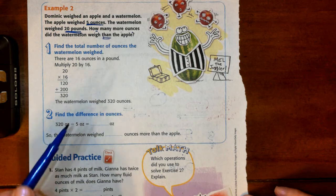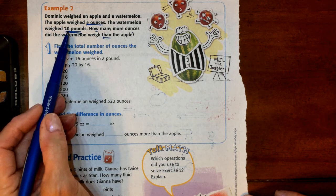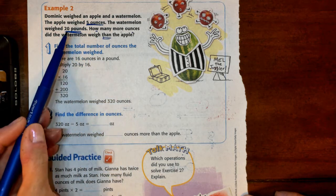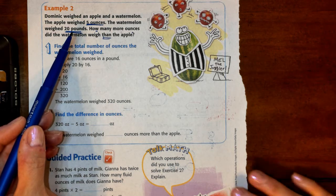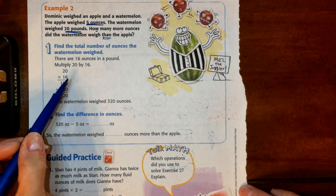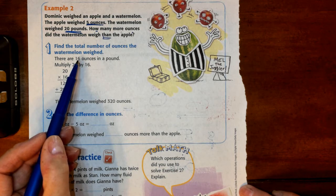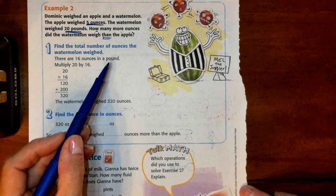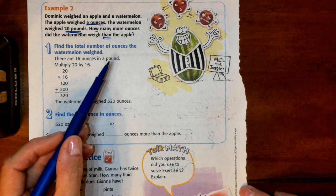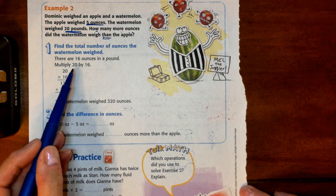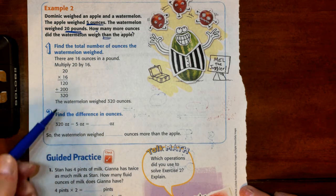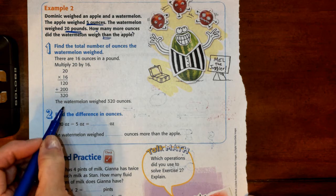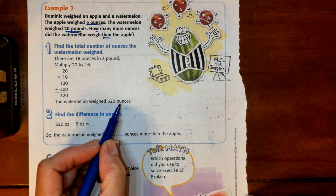So first, we're going to convert our watermelon, our 20 pounds, to ounces. Because that's what the apple's in. And again, when we're going from something larger, like a pound, to ounces, we're going to multiply. And based on our past information, we know that there are 16 ounces in a pound. Pretty sure I've asked you to tab that page that's got those conversion units on it. So we're going to multiply 20 times 16. And they've done that here for us—120 plus another 200. So we know now that the watermelon weighs 320 ounces.